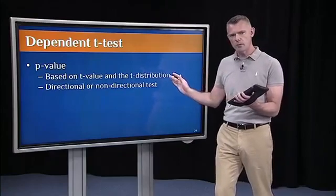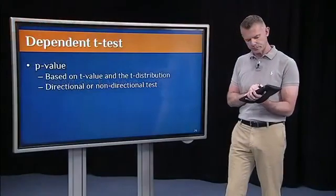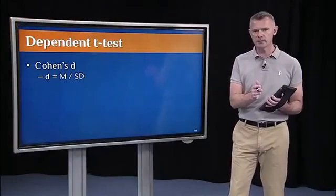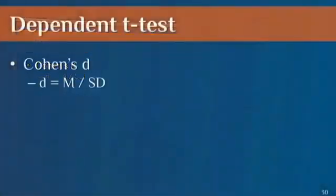The p-value will be based on that t-value, and which t-distribution you're in, and whether you're doing a non-directional or directional test. But that's NHST, so it's biased by sample size. You should supplement that with an estimate of effect size.